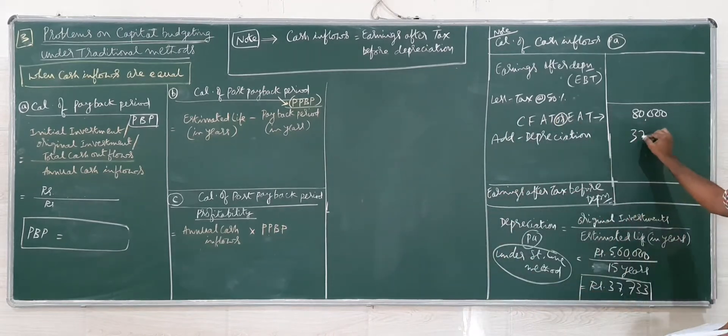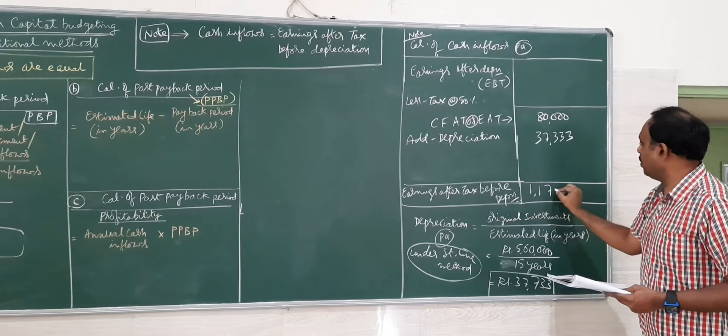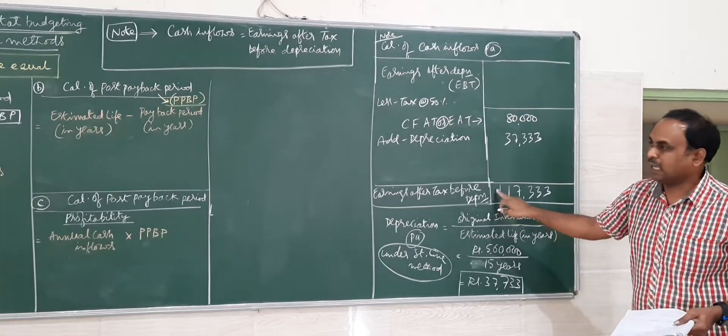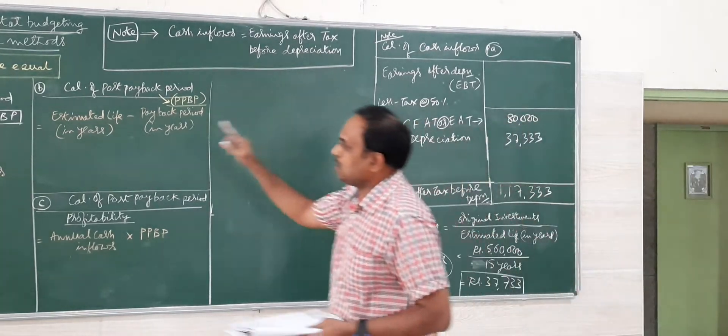Adding depreciation Rs.37,333 to EAT Rs.80,000, it comes to Rs.1,17,333. So this is the cash inflow for this particular problem.